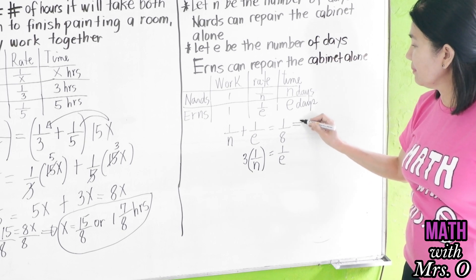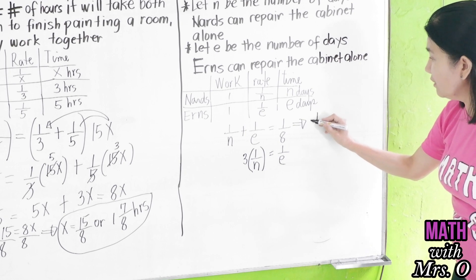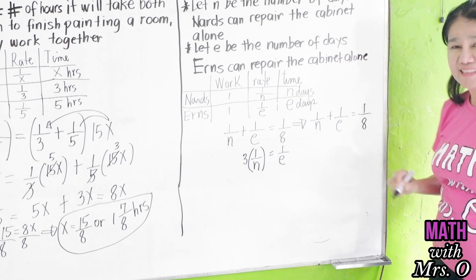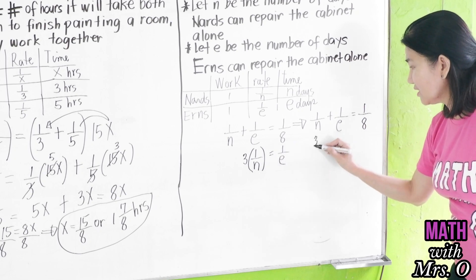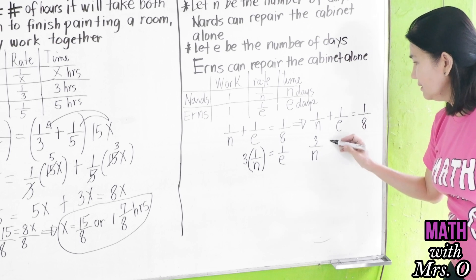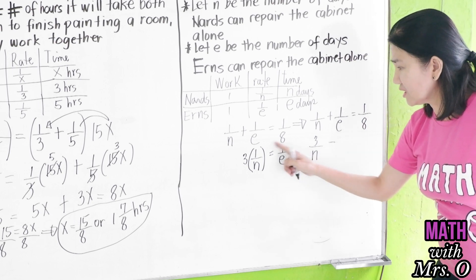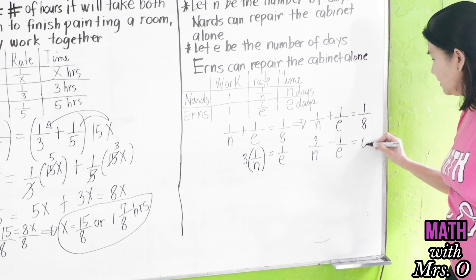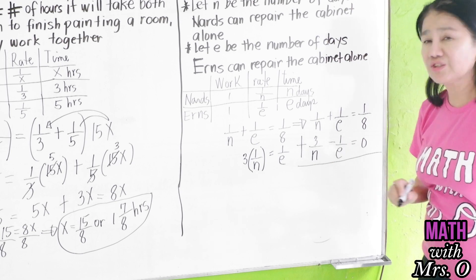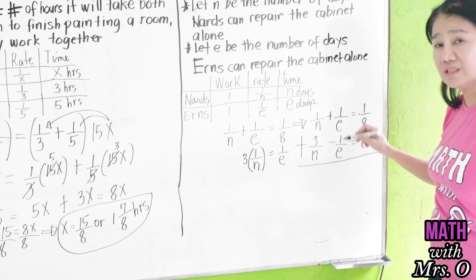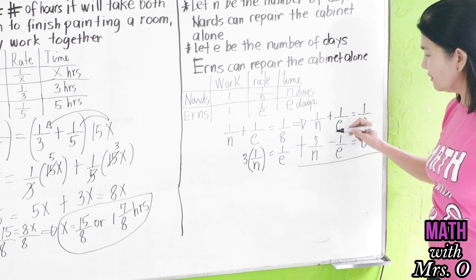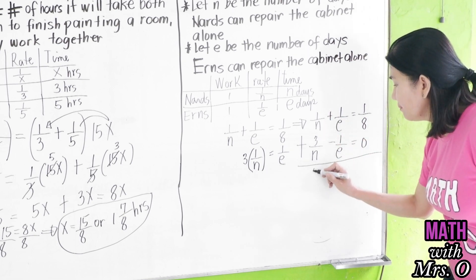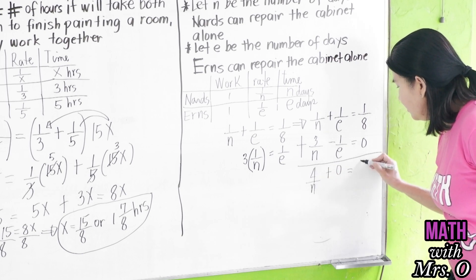So, if we simplify this, we have here 1 over N plus 1 over E is equal to 1 over 8. And, we can rewrite this as 3 over N, 3 times 1 over N minus, you can transpose 1 over E to the other side minus 1 over E is equal to, when you transpose that this one is 0. Then, you can now use elimination by addition. As you can see, 1 over E minus 1 over E gives you 0 plus 1 over N plus 3 over N is 4 over N is equal to 1 over 8.